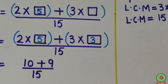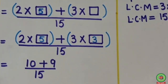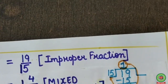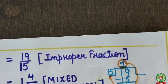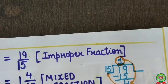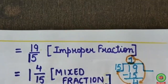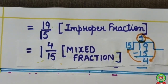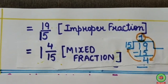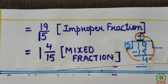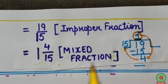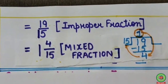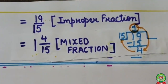Now 10 plus 9 equals 19. So it is coming 19 upon 15. As you can see, 19 is bigger than 15, so it is an improper fraction. The next step is to change the improper fraction into a mixed fraction.